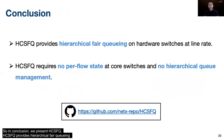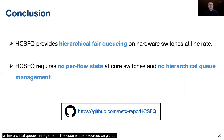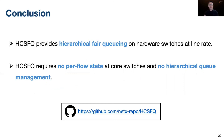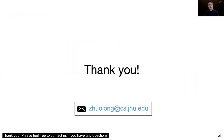In conclusion, we present HCSFQ. HCSFQ provides hierarchical fair queuing on hardware switches at line rate, and it does not require per-flow state in core switches or hierarchical queue management. The code is open source on GitHub. Thank you, and please feel free to contact us if you have any questions.